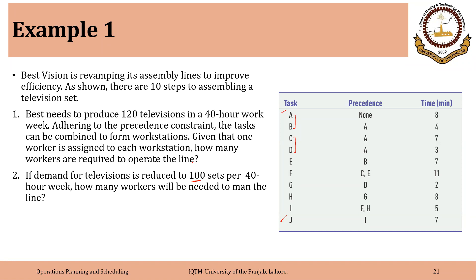There are different tasks, their sequence, and their precedence. The precedence for task B is task A, so task B cannot be started unless task A has been completed. Similarly, task C cannot be started unless task A has been finished. The precedence for B, C, and D is task A, so you cannot start tasks B, C, or D unless task A has been finished. Similarly, the precedence for task E is task B; for F there are two precedences, C and A, and so on. This is what we call a finish-to-start relationship.